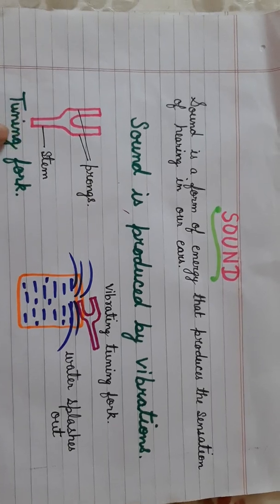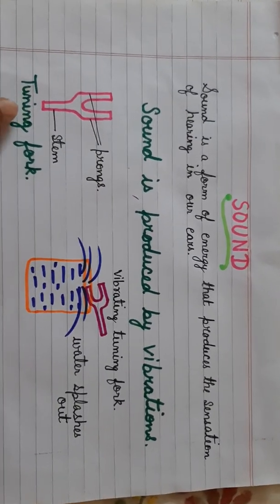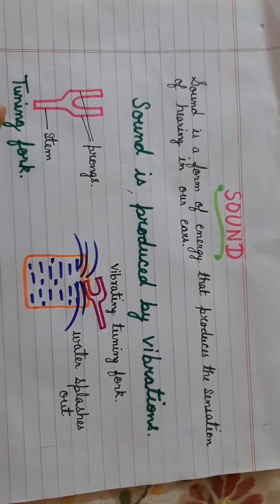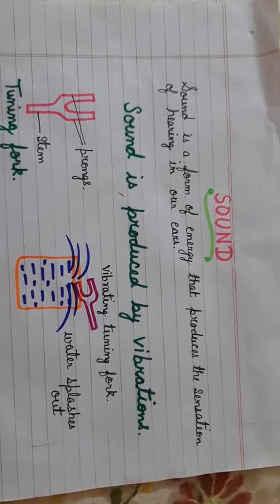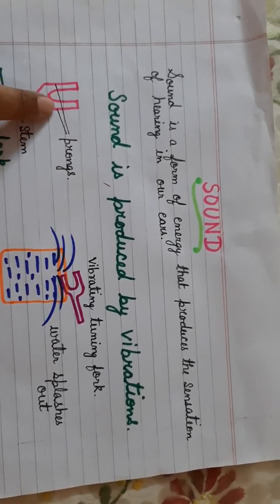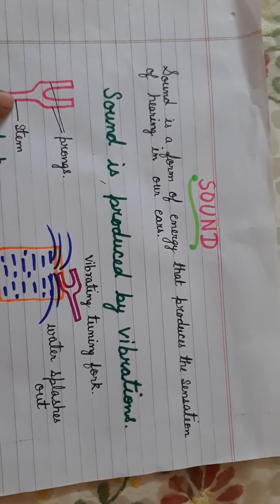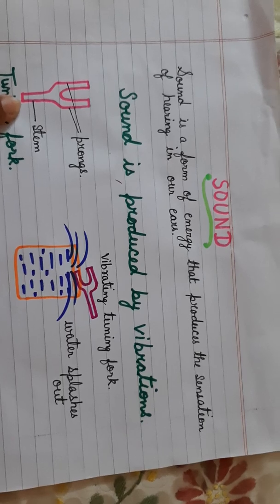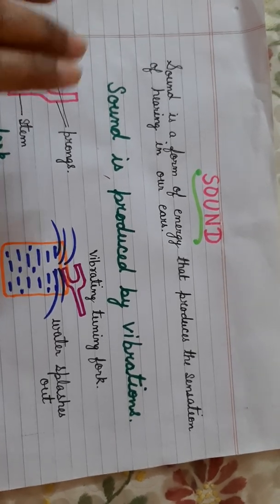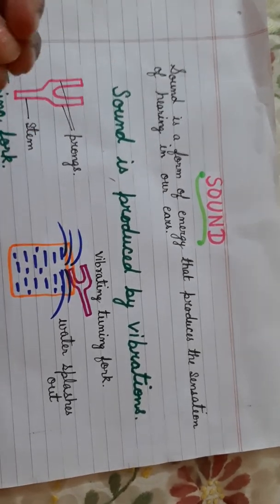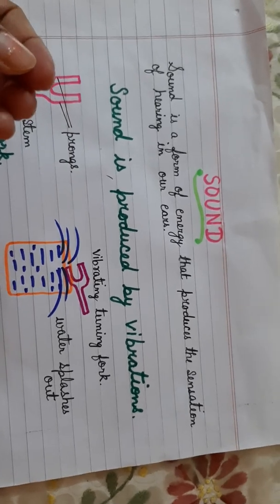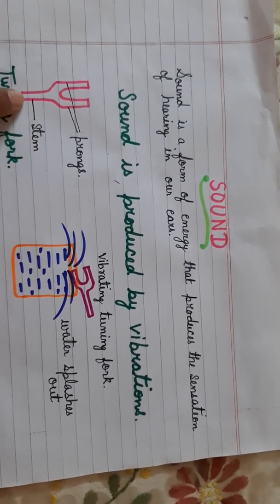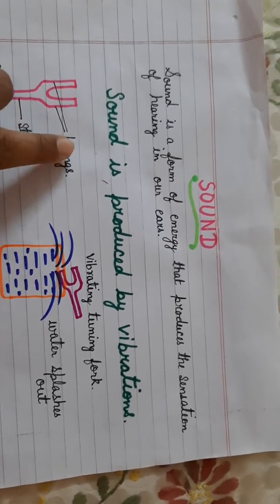You can see that I have drawn a tuning fork over here. This tuning fork is a device which is made up of metal or an alloy, and it has got two arms which are known as the prongs and it has a stem. When I vibrate this tuning fork, it sets into vibration producing a sound which we can hear. But because the tuning fork is made up of solid metal, we cannot see its prongs vibrating.